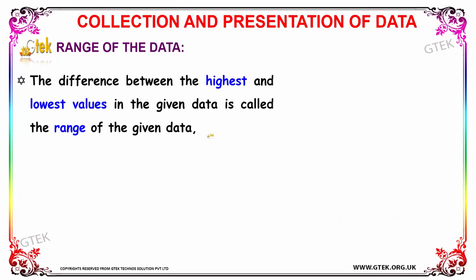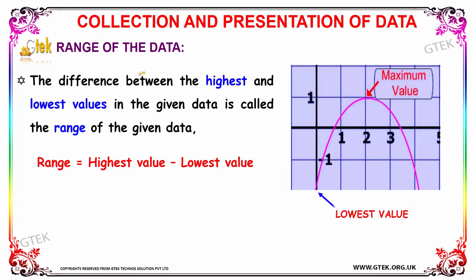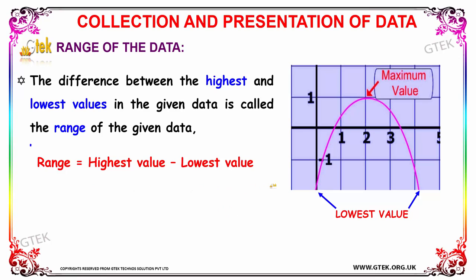Let's now discuss the range of data. The difference between the highest and lowest values in the given data is called the range of the data. The formula for range is: highest value minus lowest value.